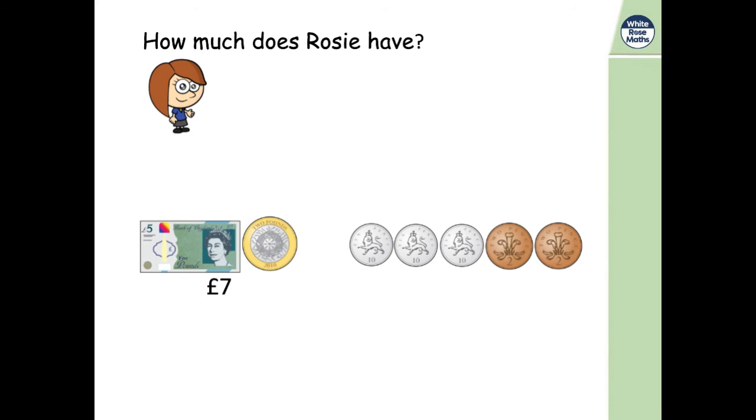So we've got seven pounds in total. And then how many pence have we got? 34 pence. Well done if you got it. So Rosie has seven pounds and 34 pence.